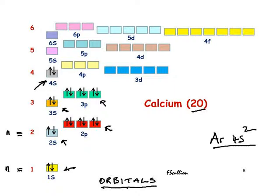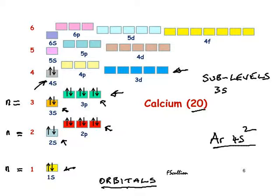What about these little subsets? For example, we have a subset here of 3 orbitals and here a subset of 5 orbitals. What are they called? The proper name for those is sublevels. For example, when it comes to principal quantum number N equals 3, you'll see that we have 3 sublevels: we've got a 3s, a 3p, and we've also got 3d.